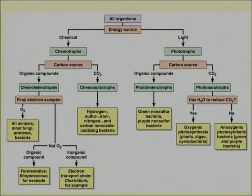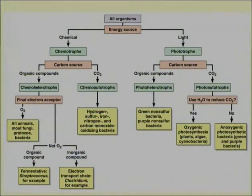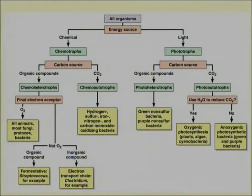Where light is an energy source, organisms are known as phototrophs. As we have seen, microorganisms based on staining are divided into gram positive and gram negative bacteria. Similarly, based on energy source, all living creatures — not necessarily only bacteria but bacteria, fungi, and other microorganisms — are divided into two groups: chemotrophs and phototrophs.